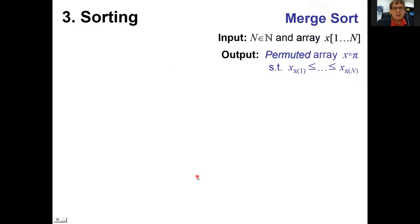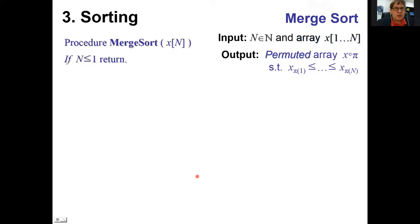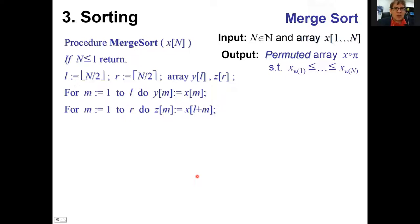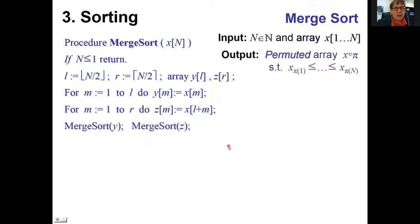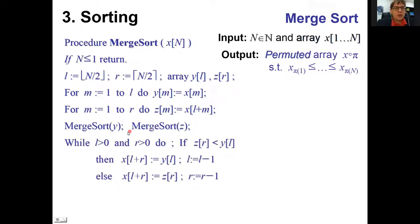We've now seen three quadratic-time algorithms. Our goal is to find a sub-quadratic one, and this is where we head to merge sort. Merge sort splits the array into two parts, puts the first half into array Y and the second into array Z, then recursively sorts each part.